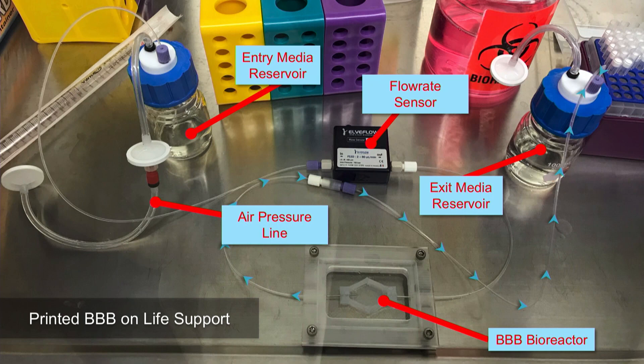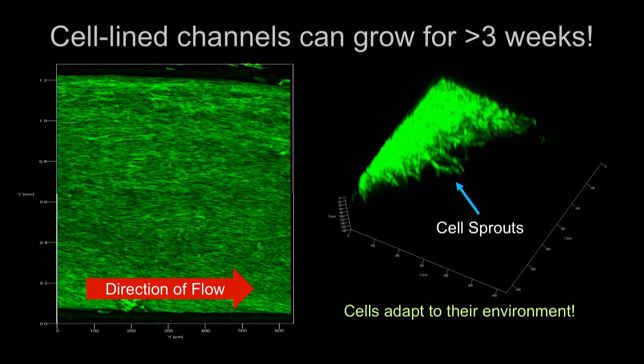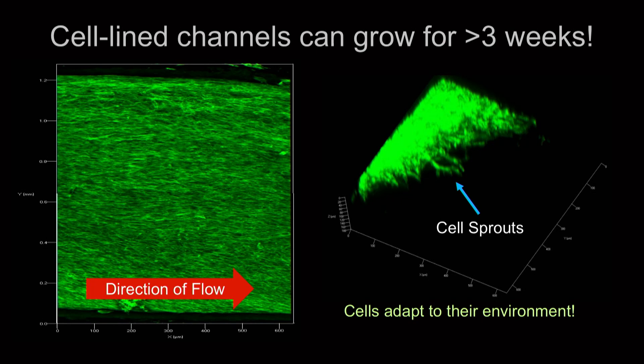Here's what a happy blood vessel looks like: an image looking up through the bottom of one of our printed channels. The green things are endothelial cells growing — specifically the cytoskeleton, a protein skeleton each cell has that allows it to move and grab onto each other. If you look closely, all the little skeletons are aligned in the direction that flow is happening — exactly what you'd expect from a real blood vessel. This means we're giving the cells an environment where they can form that blood vessel. If we let these blood vessels grow long enough, they start to sprout into their environment, forming really small blood vessels off the one we printed — showing the cells can adapt and remodel as they would in the brain.